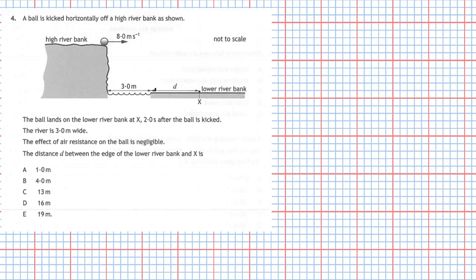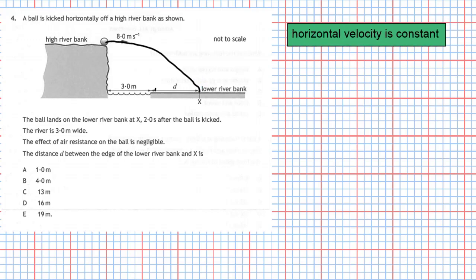We know from this diagram we've got a horizontal projectile and the ball will trace out that path. An important fact we should know is that the horizontal velocity of the motion is going to be constant — it's going to be the same. So if we take a couple of snapshots at different parts of its flight, the horizontal velocity vector is going to always be the same.